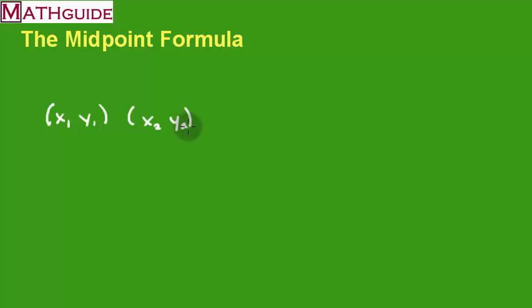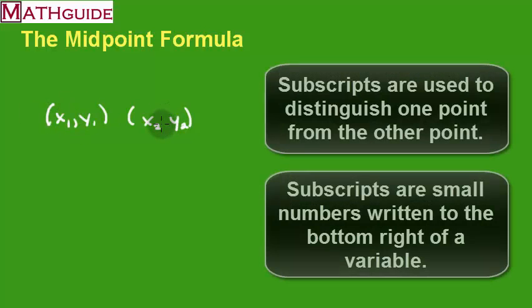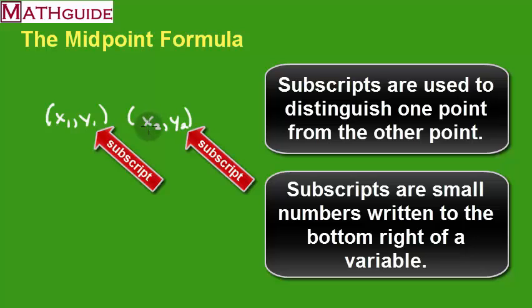There are two endpoints of a segment, and we usually find the midpoint of that segment. Since there's two endpoints, we call the first endpoint x1, y1. We call the second endpoint x2, y2. So, we have our two endpoints.